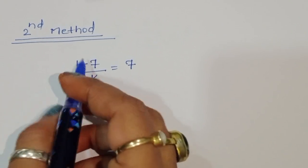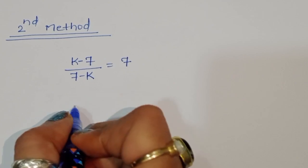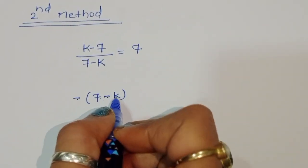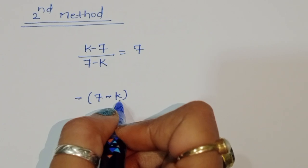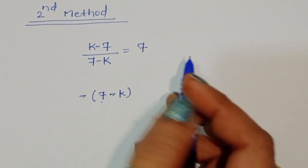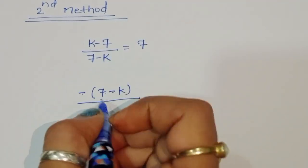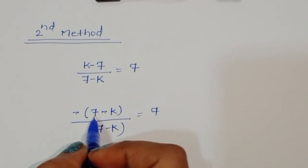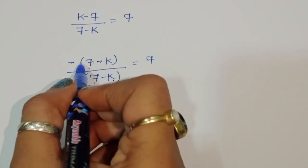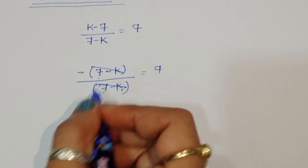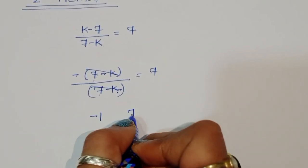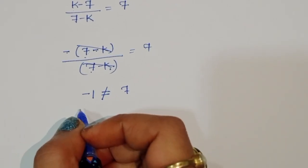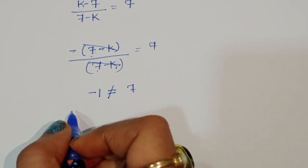In Method 2, we take minus common from the numerator: k minus 7 becomes minus(7 minus k). So the expression becomes minus(7 minus k) divided by (7 minus k), which equals 7. The (7 minus k) terms cancel, leaving minus 1. Since minus 1 is not equal to 7, there is no solution from this method either.